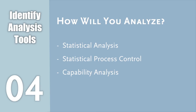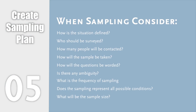Analysis of the data is equally as important as the means we will use to collect it. All methods must be properly grounded in the type and behavior of the data we collect. A series of assumptions are typically required for many of the common tests we use. When sampling, consider the following: How is the situation defined? Who should be surveyed? How many people will be contacted? How will the sample be taken? How will questions be worded? Is there any ambiguity? What is the frequency of the sampling? Does the sampling represent all possible conditions? Will it be representative? And finally, what will be the sample size?